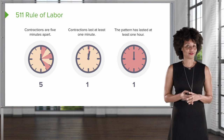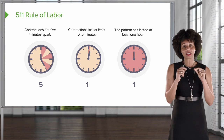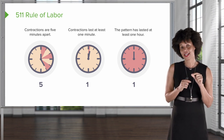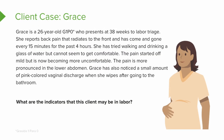Now let's work through a case study to see if we can put these pieces together. Grace is a 26-year-old, Gravida-1, Para-0 (G1P0), who presents at 38 weeks to labor triage. She reports back pain that radiates to the front, coming and going every 15 minutes for the last four hours. She's tried walking and drinking water but can't get comfortable. The pain started mild and is becoming more uncomfortable, more pronounced in the lower abdomen. Grace has also noticed a small amount of pink discharge when wiping after going to the bathroom.